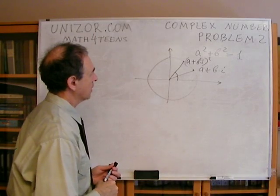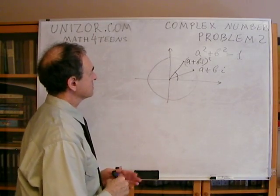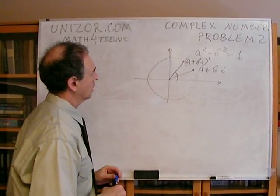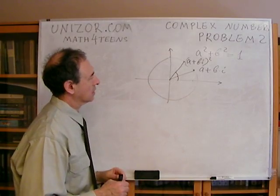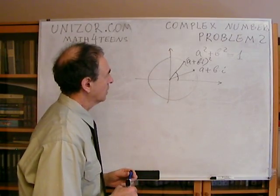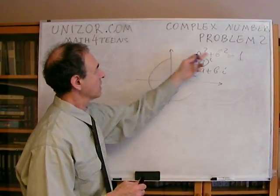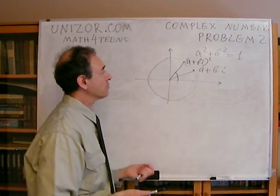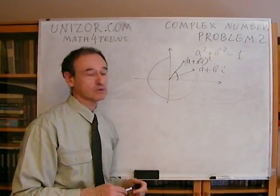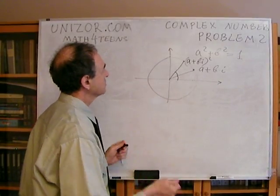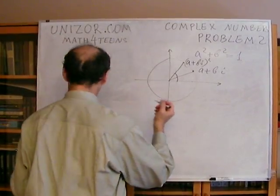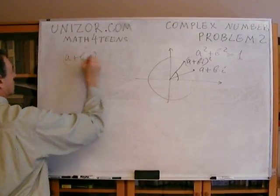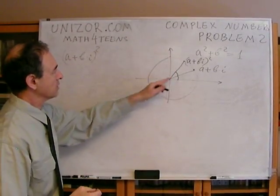Let's prove the first part — that's the easy one. The distance between two points representing complex numbers is the modulus of their difference. Since one of the points is zero, it's just the modulus of the number itself. Let's find the modulus of a plus bi squared. We'll use the fact that a squared plus b squared equals 1, so we need to know the modulus of (a+bi)².